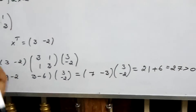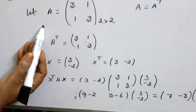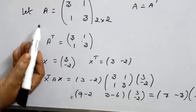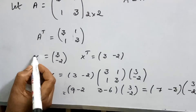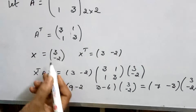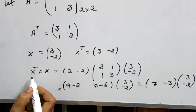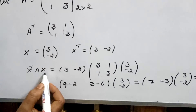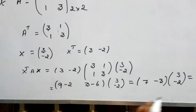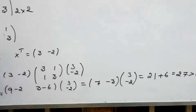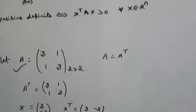We chose a 2 by 2 symmetric matrix and correspondingly chose a column vector x. Then x-transpose Ax gave a value greater than 0. Therefore, the given matrix is a positive definite matrix.